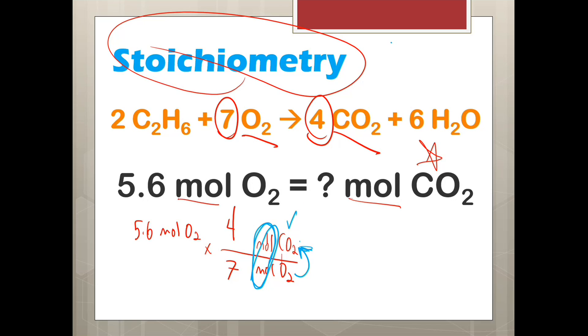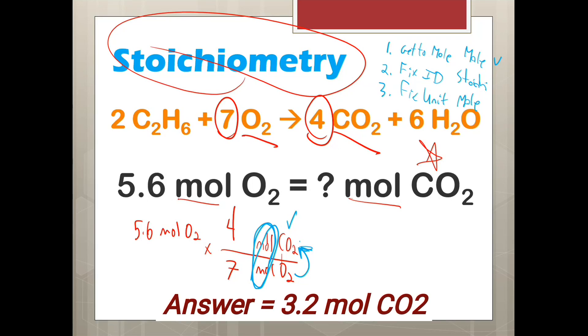And remember the three steps to stoichiometry. One, get to the mole. If you're not already in mole, we are, so we didn't have to do that. Number two, fix your identity using stoichiometry. And three, fix your units using a mole conversion. And this would also be a mole conversion. So, typical stoichiometry problem is mole, stoic, mole. But this one was already in mole, and it wanted mole. So, we basically just had to do step two, our stoichiometry. Divide by seven times by four, you get 3.2.